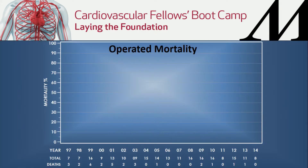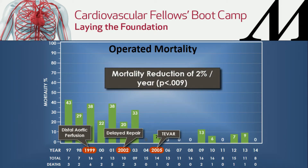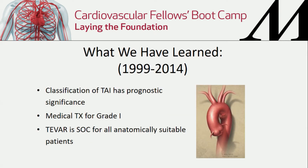This slide shows that reduction per year, moving from distal aortic perfusion to delayed repair, and then TEVAR had the lowest mortality — about 2% per year reduction, which was statistically significant. On the survival curve, the red line is TEVAR, so initially you had a benefit for survival. Eventually the lines converge because at 5, 10, or 15 years, you're going to die from other medical problems, not from the blunt injuries.